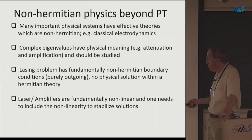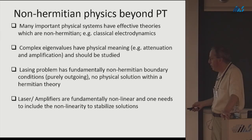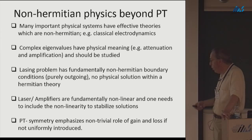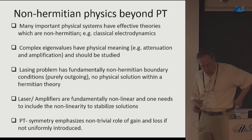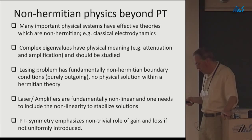The lasing problem has a fundamentally non-Hermitian boundary condition because you're looking for purely outgoing solutions of the classical or semi-classical equations, so you won't find the right solution in an effective Hermitian theory. They're also fundamentally non-linear, and you need to include that non-linearity to stabilize the solution. PT symmetry emphasizes the non-trivial role of gain and loss when introduced non-uniformly — in space or at a boundary — which does some really new things still being studied.